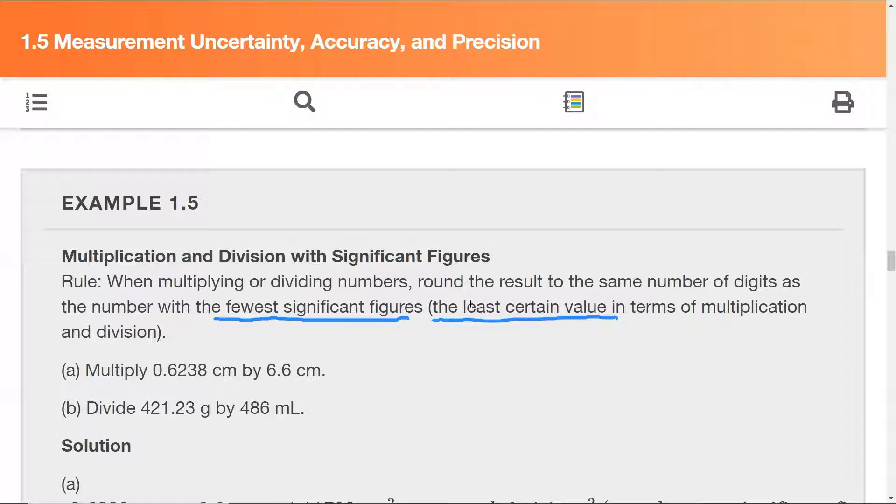Step one, count significant figures. So here we've got, I remember that on the very left is not a significant figure, but everything after the decimal point that is after an actual number. So one, two, three, four significant figures.